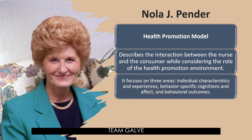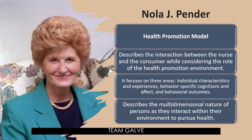The Health Promotion Model focuses on three areas: individual characteristics and experiences, behavior-specific cognitions and affect, and behavioral outcomes. It also describes the multidimensional nature of persons as they interact within their environment to pursue health. If you want me to do a thorough deep dive discussion regarding the Health Promotion Model by Nola J. Pender, let me know in the comment section below.